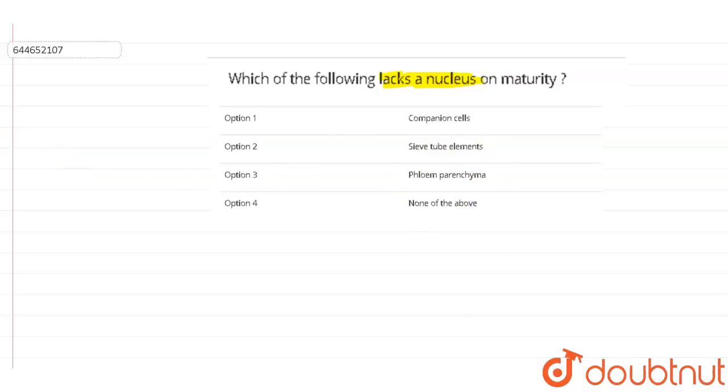Now if we talk about these options, these options are given as a part of phloem. As we all know, phloem is a food conducting tissue of our plant. Now this phloem has four main parts which consist of a phloem.